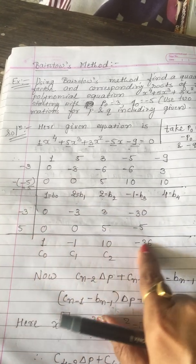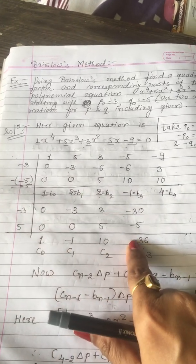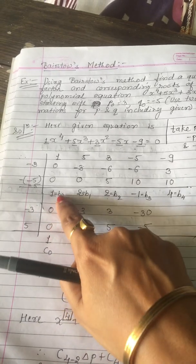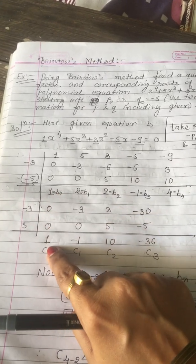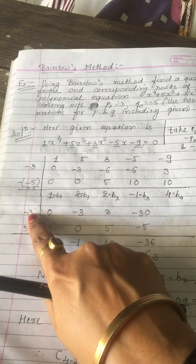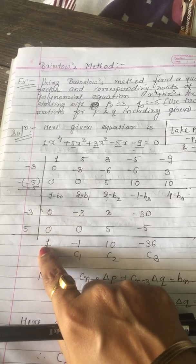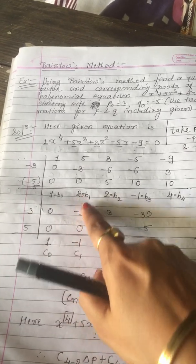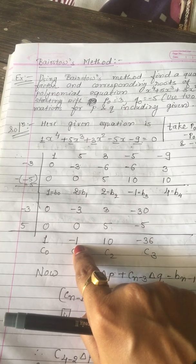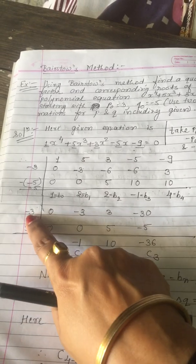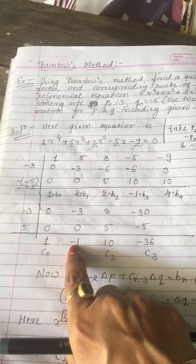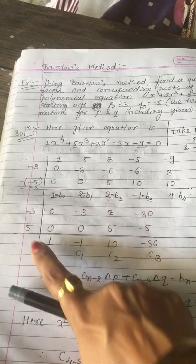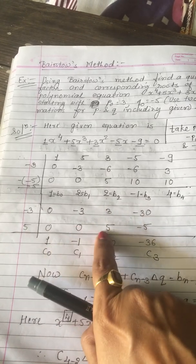Again applying the synthetic method using these factors. Starting with 0, 0 — addition of these three terms is 1. Minus 3 multiplied by 1 gives minus 3; addition of these three gives minus 1. Minus 3 multiplied by minus 1 gives plus 3. Then 5 multiplied by 1 is 5. Addition of 2, 3, 5 gives you 10.